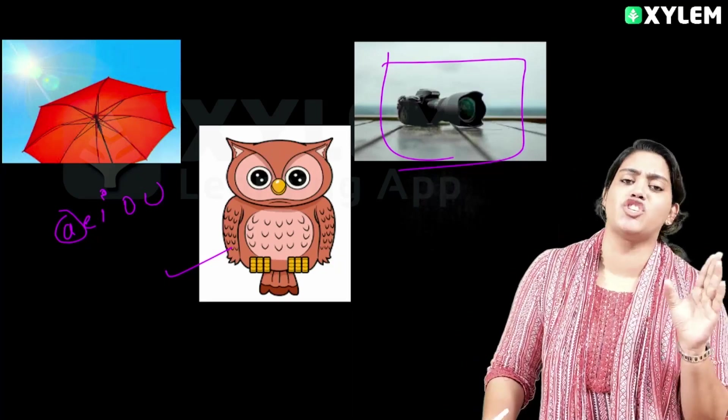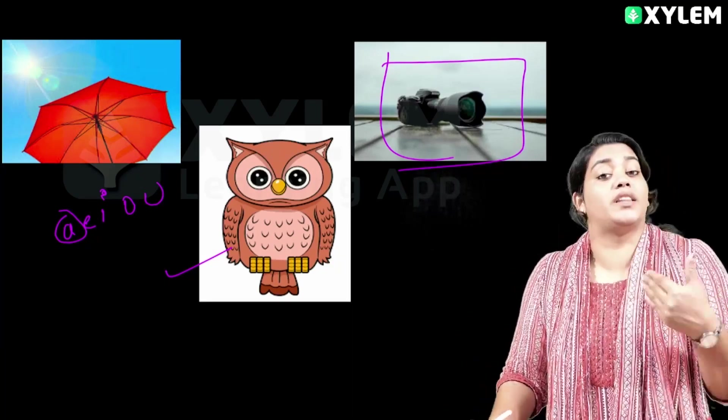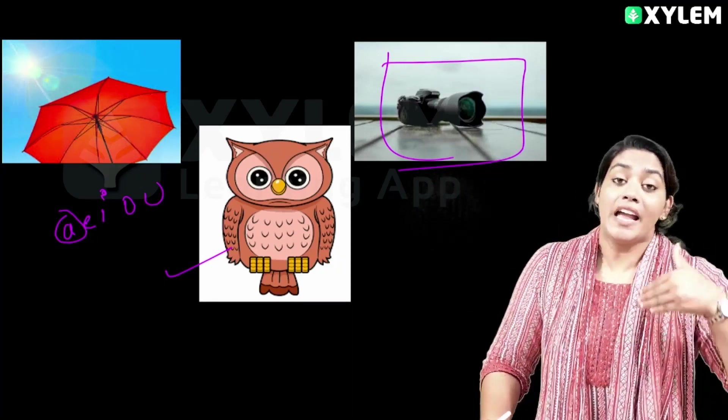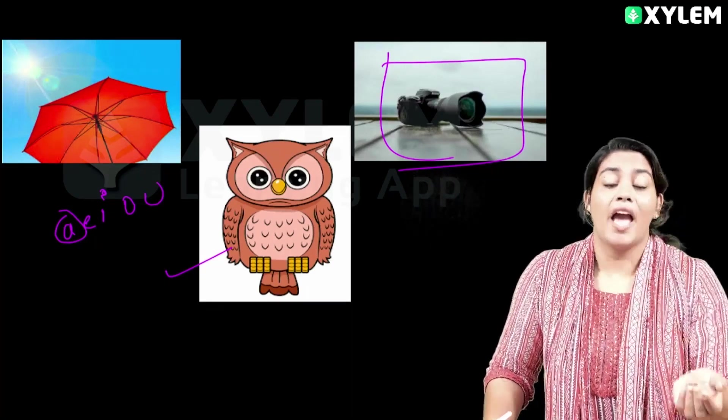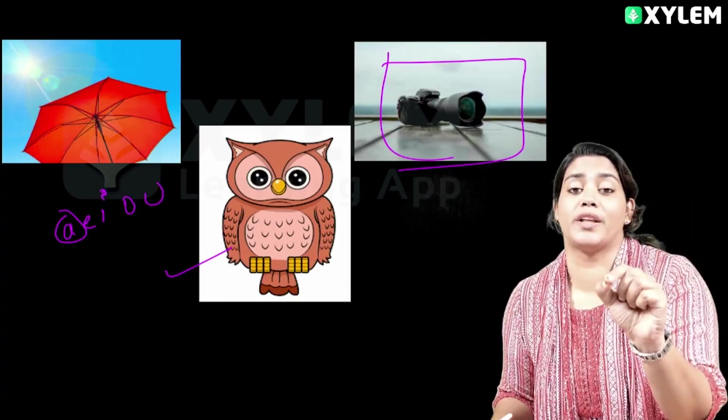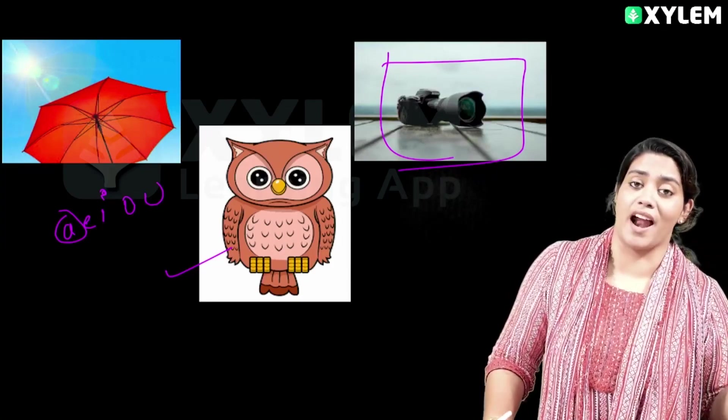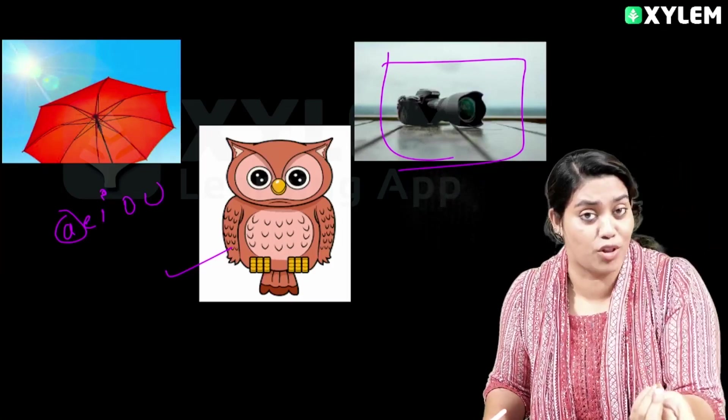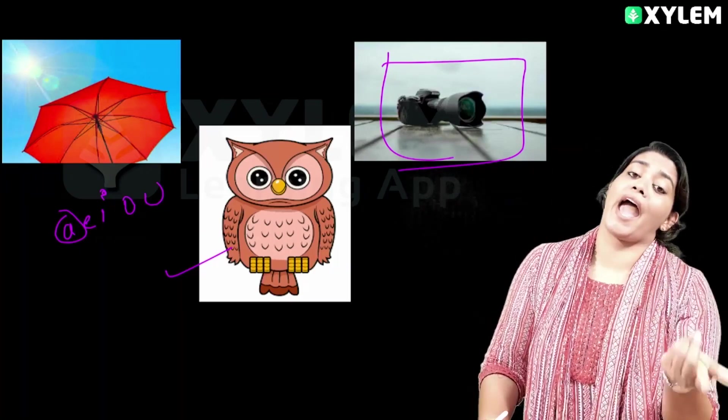Now let's say 'image' — the sound is E, this is a vowel sound, so that is 'an image'.